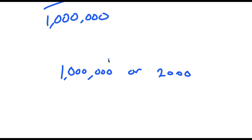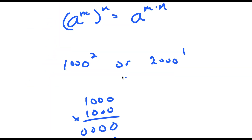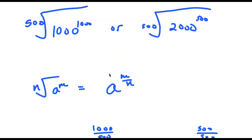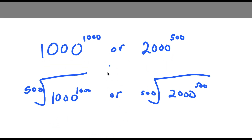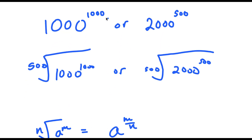And obviously 1,000,000 is greater, meaning 1,000 to the power of 1,000 is greater than 2,000 to the power of 500.